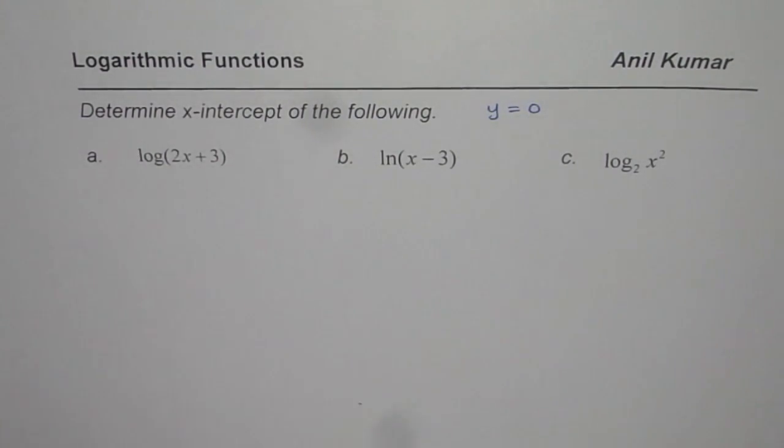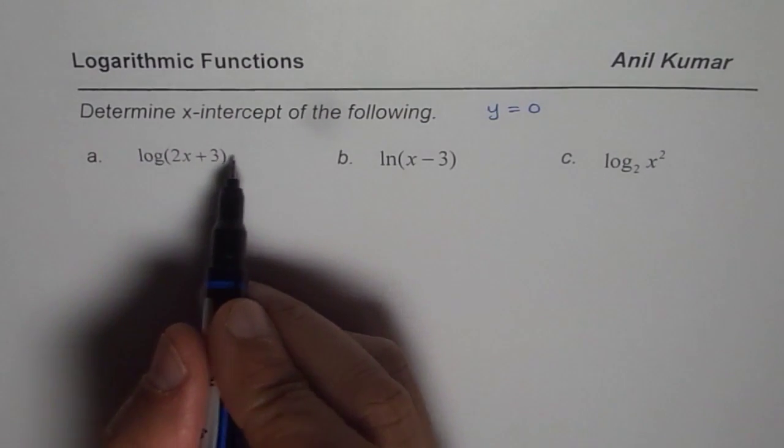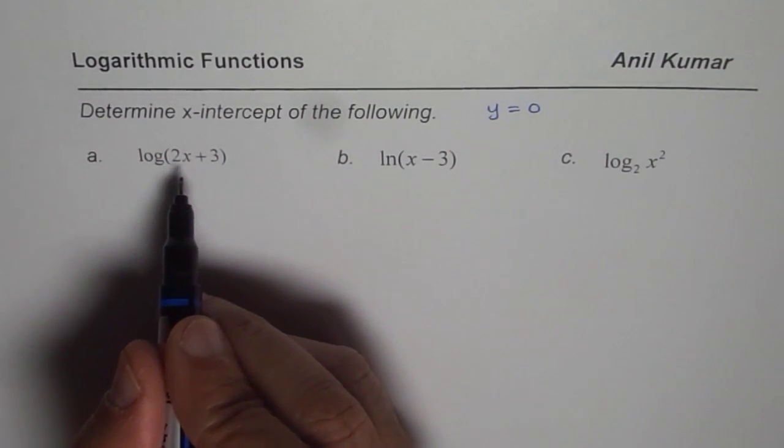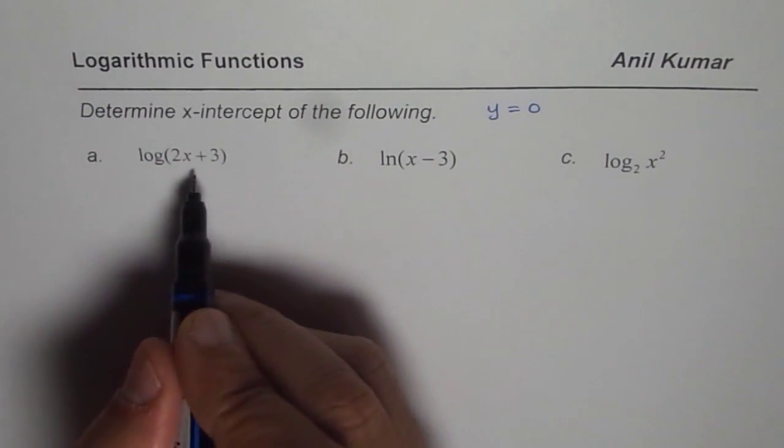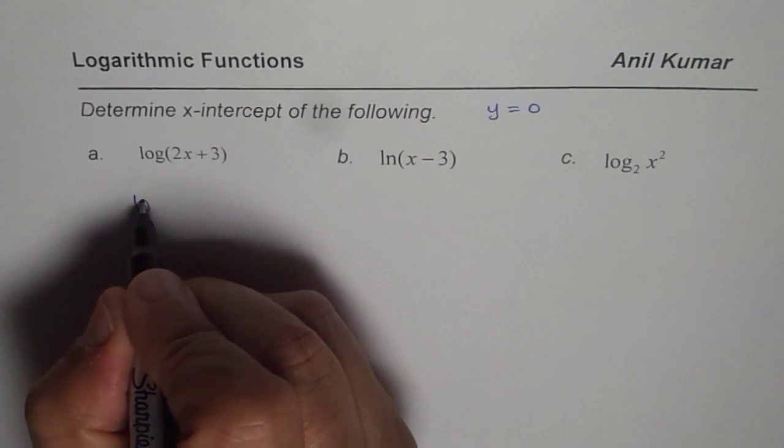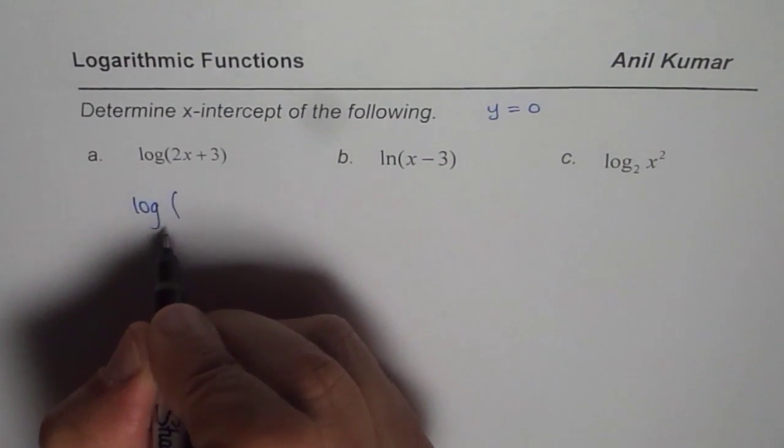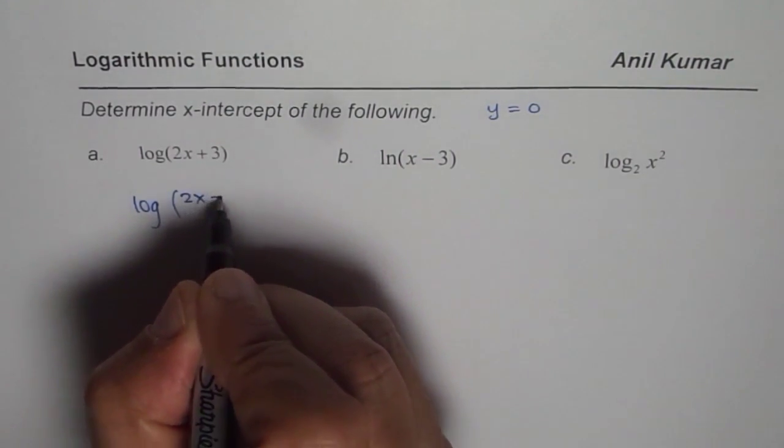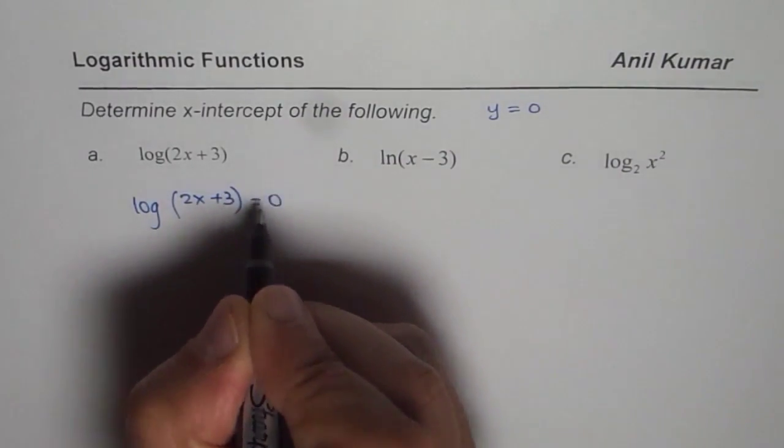We have given three different logarithmic functions here. We need to find each x-intercept. I can write their value as equal to 0 and find what value of x will make this function 0. Let us begin with the very first one. It is log to the base 10, 2x plus 3.